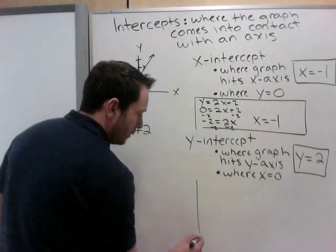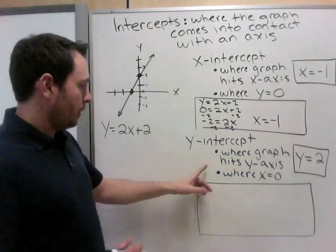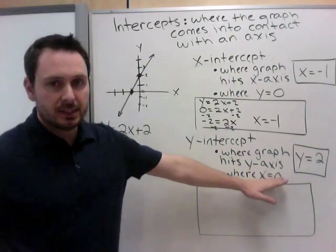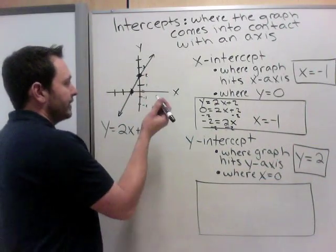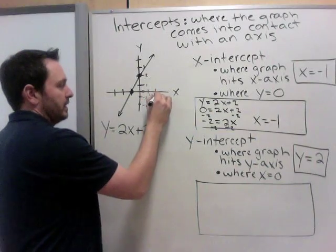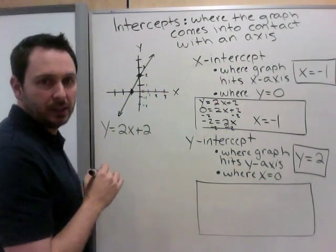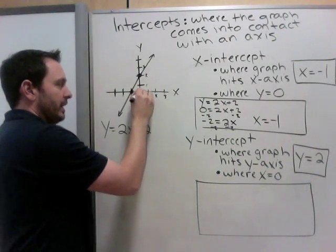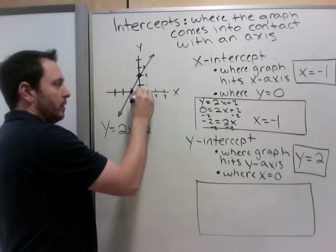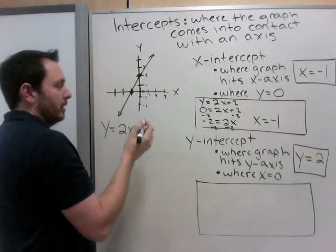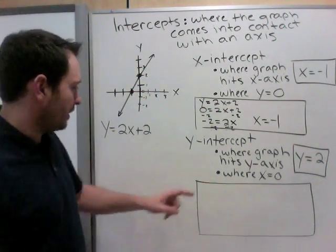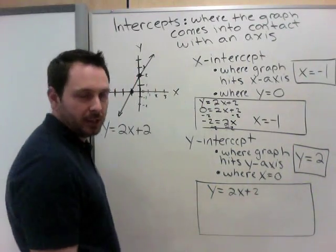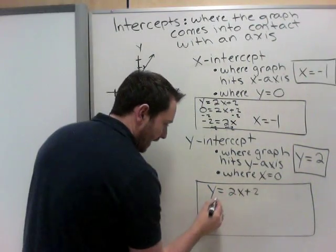So now let's do the next one. So a y-intercept is where my x value is 0. So let's find where x equals 0. Well, x equals 1, x equals 2, x equals 3, x equals negative 1, negative 2, negative 3. So x equals 0 right here. So where is that occurring? Well, let's see. Where does x equal 0? Take your equation and put a 0 in the x's spot.